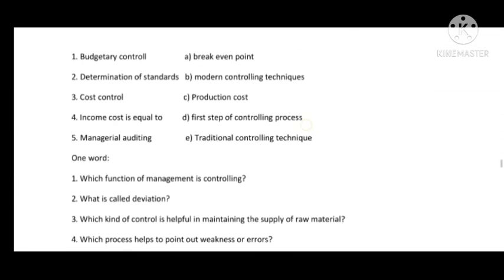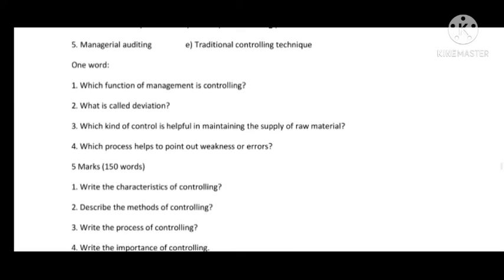By controlling, discipline is established — True. In Match the Column: Budgetary control is a modern controlling technique — answer B. Determination of standards is the first step of the controlling process — answer D. Cost control is related to production cost — answer C. Income equal to cost is called the Break Even Point — when income equals cost, it is the break-even point. Marginal costing and managerial auditing are traditional controlling techniques.